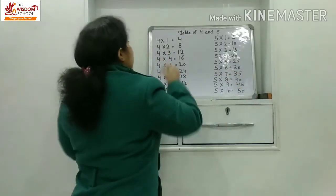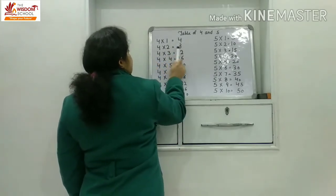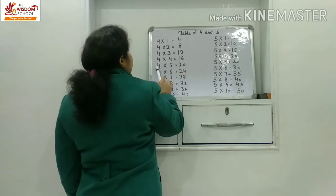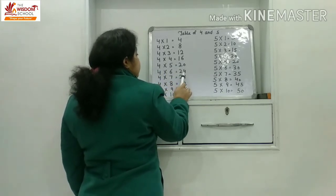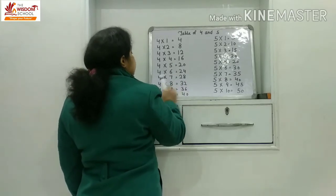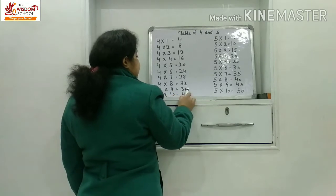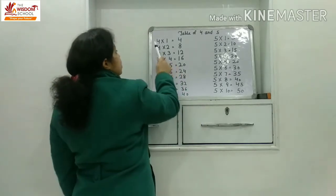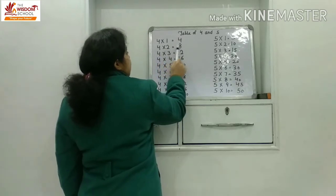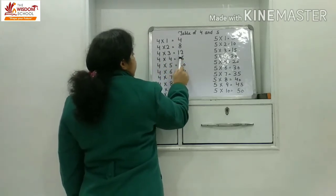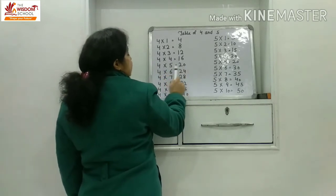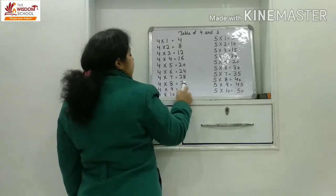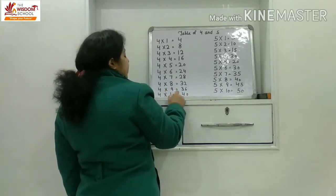Now look at the whiteboard — table of four. Four ones are four. Four twos are eight. Four threes are twelve. Four fours are sixteen. Four fives are twenty. Four sixes are twenty-four. Four sevens are twenty-eight. Four eights are thirty-two. Four nines are thirty-six. Four tens are forty. One more time: Four sixes are twenty-four. Four sevens are twenty-eight. Four eights are thirty-two. Four nines are thirty-six. Four tens are forty.